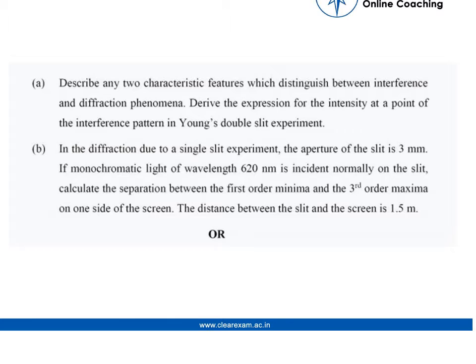In diffraction due to single slit experiment, the aperture of the slit is 3 mm. If monochromatic light of wavelength 620 nm is incident normally on the slit, calculate the separation between first order minima and third order maxima on one side of the screen. The distance between the slit and screen is 1.5 meters.